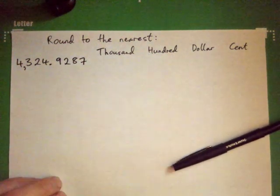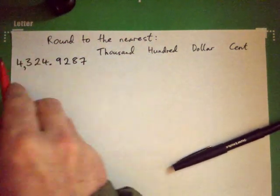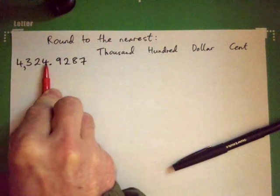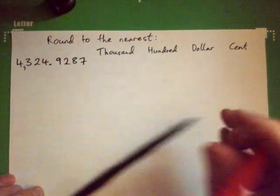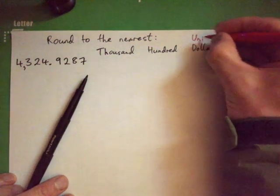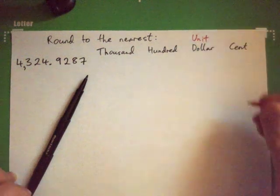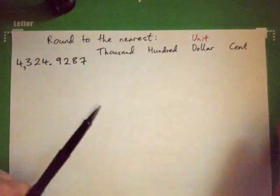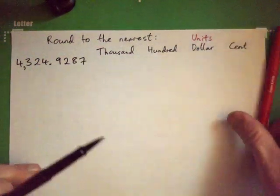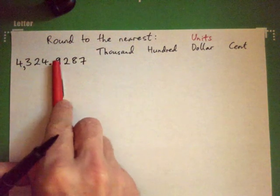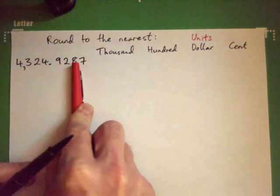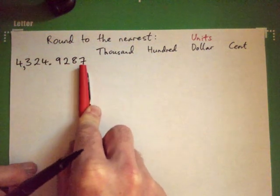Remember our place value: we've got thousands, hundreds, tens, units — or dollars, same thing as units, or ones. And then you've got tenths, hundredths, thousandths, and ten-thousandths.